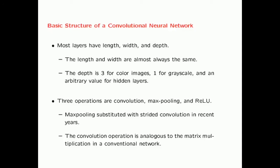Let's talk about the basic structure of a convolutional neural network. Most layers are spatially structured with a length, width, and depth. Some of the final layers are not spatially structured — they are called fully connected layers. This spatial structure is inherited from the image itself. In most cases, the input images as well as the intermediate layers are square, meaning the length and width are almost always the same. However, the depth may vary for different layers.